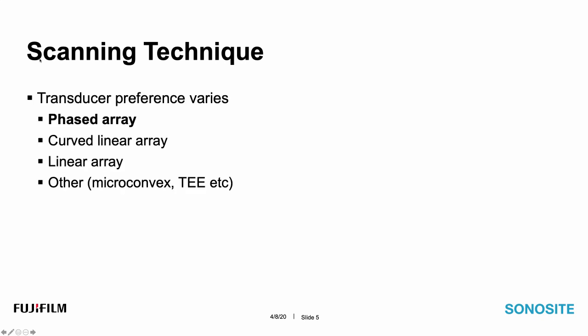You have a choice of transducers, and everyone will have their favorite. We use the phased array transducer primarily, for many reasons — its small footprint and its versatility to be used to image other organ systems that are often of interest when scanning a critically ill patient. The curved linear array transducer is popular with some because it has a larger footprint and therefore captures more of the lung tissue.